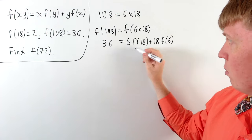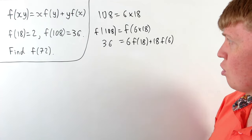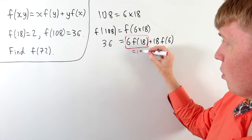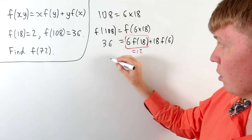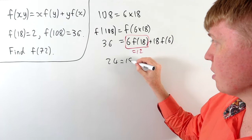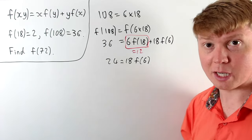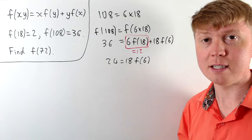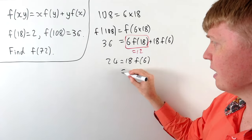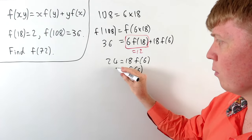So now we also know the value of f of 18 is 2, so 6 times f of 18 is just going to be equal to 12. So we can take away the 12, we get 24 equals 18 times f of 6, and then dividing through by the 18, 24 over 18 simplifies to give us that f of 6 is going to be equal to 4 thirds.